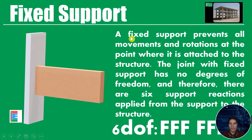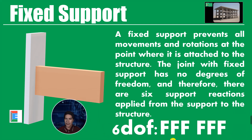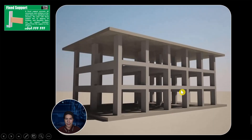The fixed support prevents all movement and rotation at the point where it is attached to the structure. A joint with a fixed support has no degrees of freedom, and therefore six support reactions are applied from the support to the structure. The restraint code for a fixed support is F-F-F for x, y, and z translation, and F-F-F for x, y, and z rotation — no R or release at all. Examples include concrete monolithic construction, where the footing and connections are in fixed support.